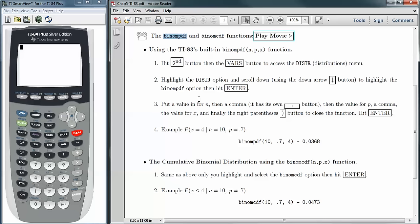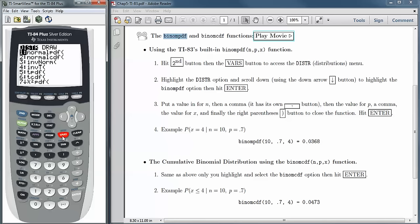We'll follow along this example here. The way to get to this function is to press second and then VARS. That gets us up to distributions, D-I-S-T-R in blue up here. So it's the second button followed by VARS. I'm looking for the BINOMPDF function. It's not on the first page, I have to keep scrolling down.